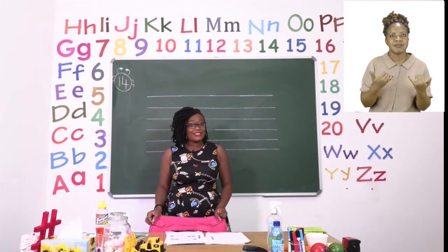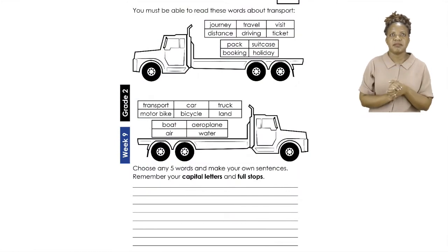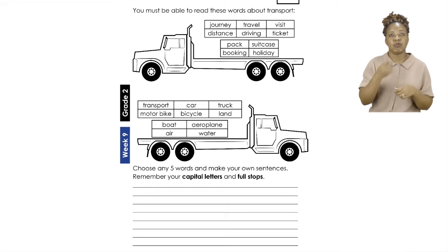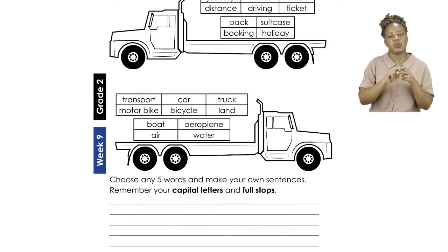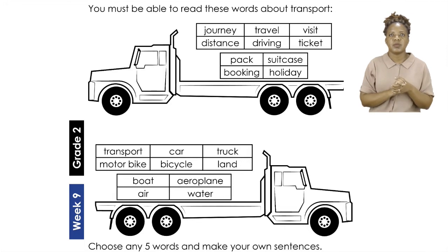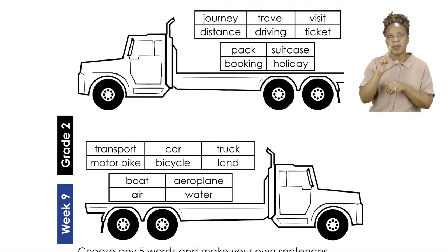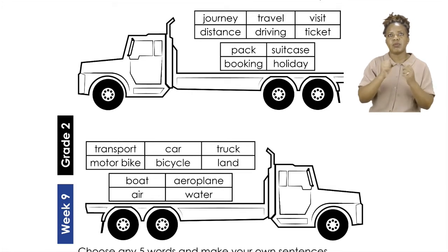Now we are going to do some creative writing on page 14. On page 14, you are going to be using specific words to write your sentences. We have two lorries, both carrying bricks with words that you need to use in your sentences. You must be able to read the words about transport before you use them. So let's take a look at the words. We are going to read the ones on the top first, then the ones on the bottom. The words are: journey, travel, visit, distance, driving, ticket, pack, suitcase, booking, holiday.